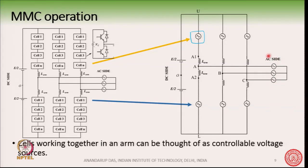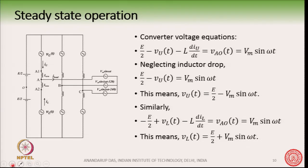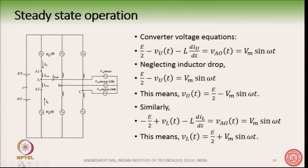This arm is now replaced by a controllable voltage source in the circuit model. There are six such controllable voltage sources — one per arm — corresponding to the six arms of the converter. These six controllable voltage sources are completely independent of each other, which is something unique to this converter. On one side we have the AC, and on the other side we have the DC.